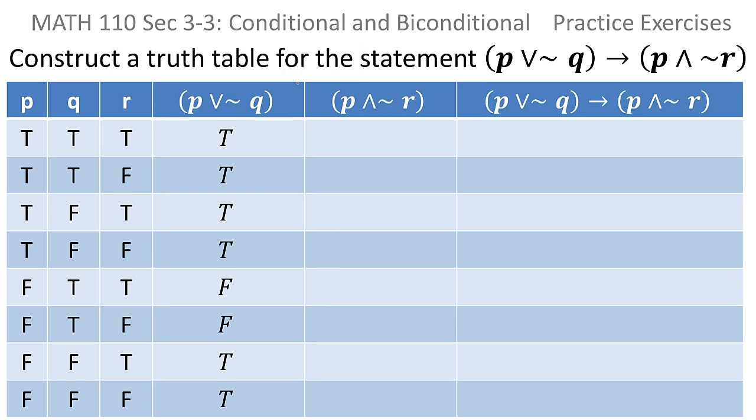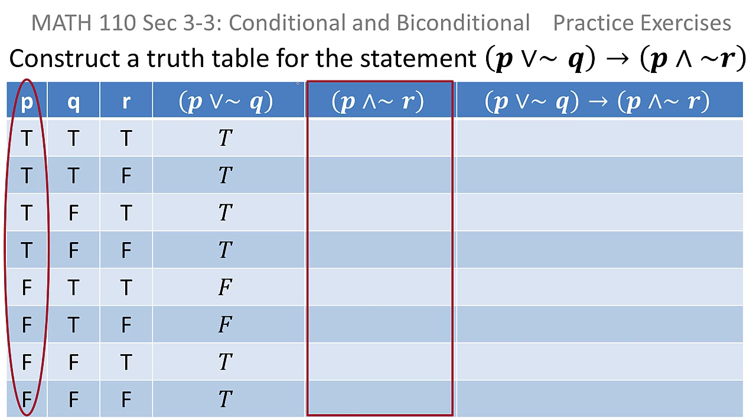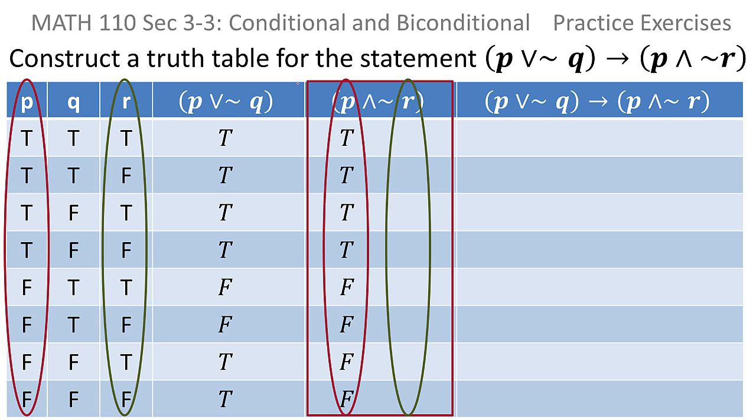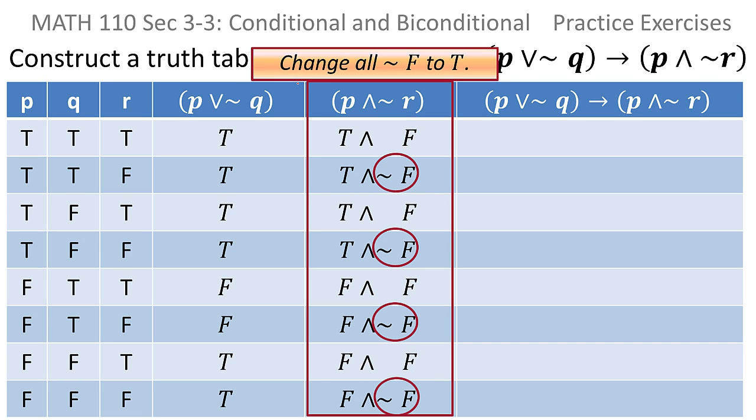Now that we have that column, we move over to the next column. Do the same sort of thing, except this time it's an AND. Start off, put all the P's in, then put the R's in. And that gives you a resulting statement in which all the NOT TRUEs can be changed to FALSE, and all the NOT FALSEs can be changed to TRUE.